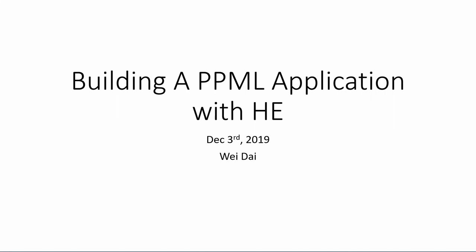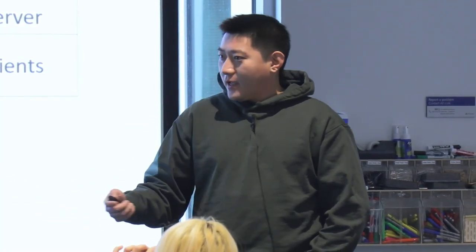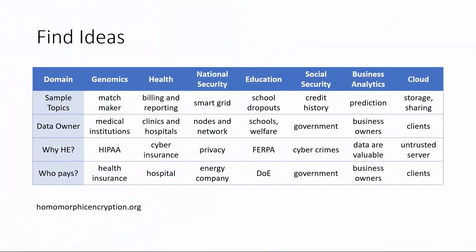In my talk I'll start with how to find the idea for machine learning homomorphic encryption applications. This is a white paper written two years ago, also written in Richmond. We have experts from healthcare, NIH government representatives, cryptographers, people from academia and industry, and altogether we wrote three white papers: one for API standardization, one for security standardization showing how to choose security parameters, and this one is about the applications.